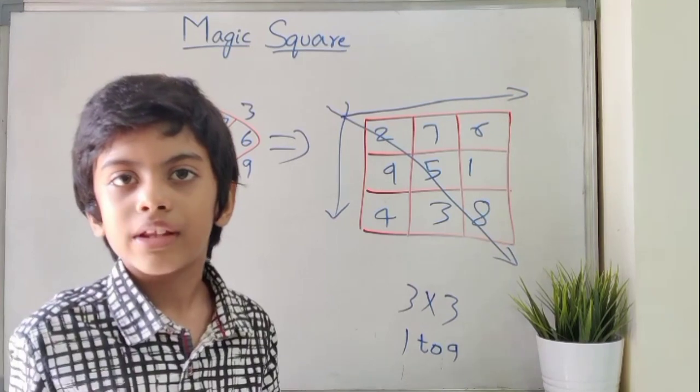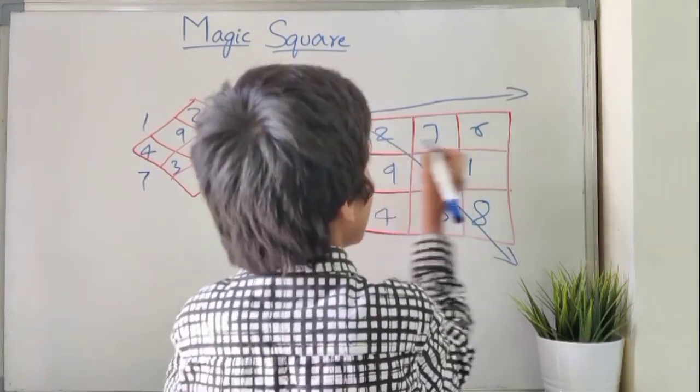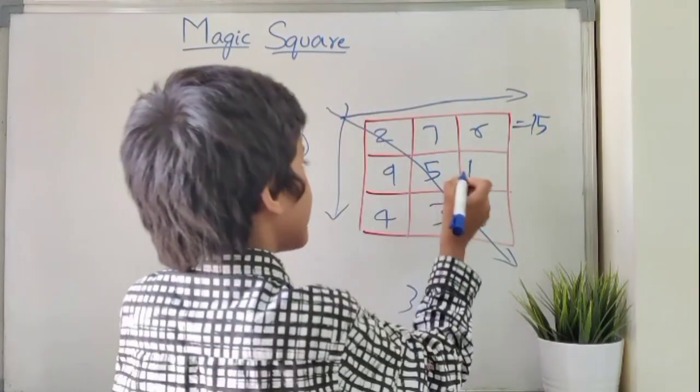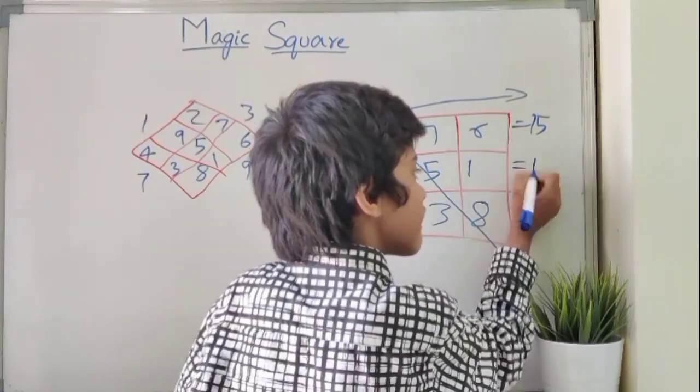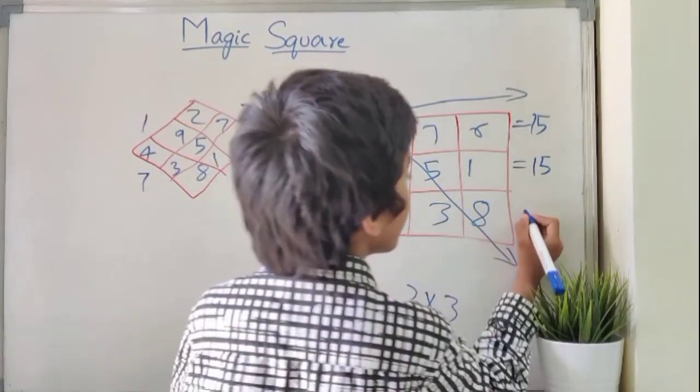Now let's calculate these numbers. First we'll go with rows. 7 plus 2 is 9, 9 plus 6 is 15. 5 plus 1 is 6, 6 plus 9 is 15. 4 plus 3 is 7, 7 plus 8 is 15.